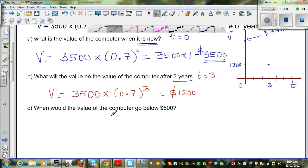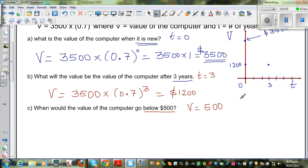Now the last question is, when would the value of the computer go below $500? We want to find when it would go below 500. So I am going to ask the question, when the value is 500. We are asking, when would the value of the computer be exactly $500? If you know that, we can answer this question below 500 later on.